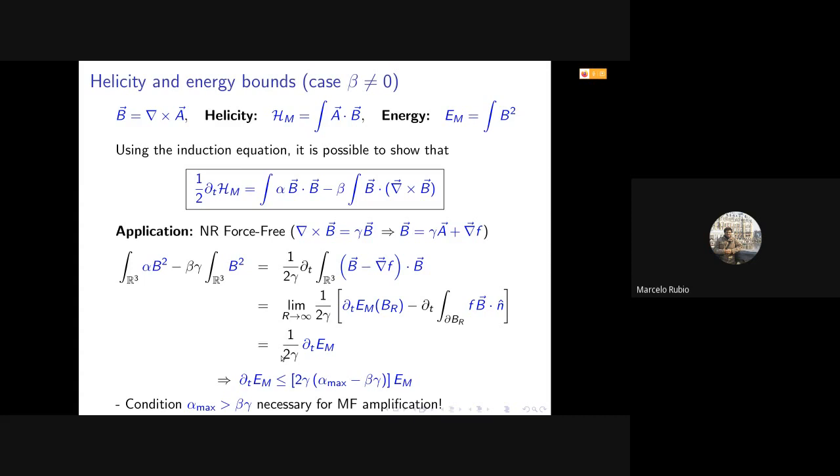In this case, we consider the non-relativistic force-free case in which the curl of the magnetic field goes along the magnetic field itself. Well, just by computing some integrals in a nice way, we can arrive to this bound for the magnetic energy. And we can see that a necessary condition in order for the electromagnetic energy to grow is to take the maximum of this alpha here—that is a function of space—to be greater than this product of beta and gamma.